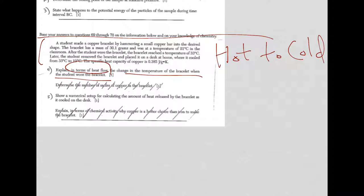Well, before the bracelet was worn by the student, the temperature of the bracelet was 21 degrees and then after was 33. So the temperature of the bracelet went up. Well, why did it go up? Because the bracelet was absorbing energy from the student. So it says in terms of heat flow. So hot to cold means that the heat flowed from the student to the bracelet. And that's exactly what you could write down. The heat flowed from the student to the bracelet.